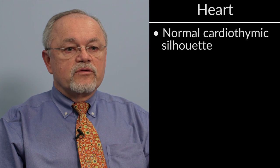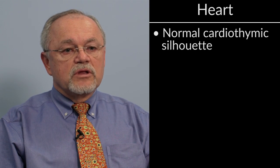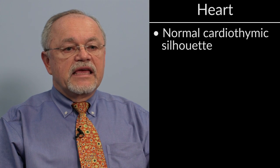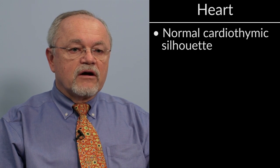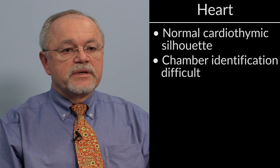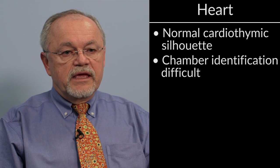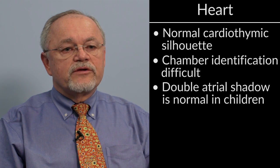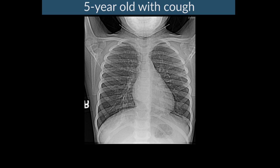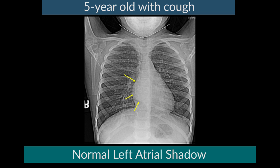Heart. We often talk about a normal cardiothymic silhouette in children rather than a cardiac silhouette, because the thymus can be so large that it encompasses the heart all the way down to the diaphragms. The shadow of the heart in young children is composed of both the heart and the thymus. It is very difficult in young children to determine specific chamber enlargement because the heart is relatively large in proportion to the chest. A normal double atrial shadow is a normal finding in children, unlike adults. Here, a five-year-old girl with cough has a prominent left atrial shadow — a totally normal finding, unlike in adults where it can be pathologic.